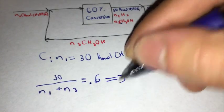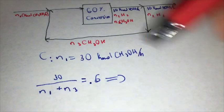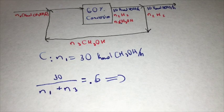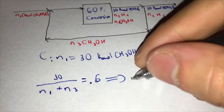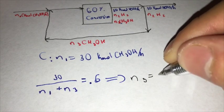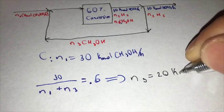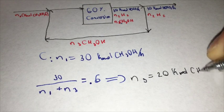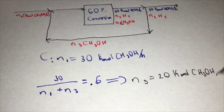That, when we solve it, remember we already have N1 which is 30, is going to give us our N3, which is equal to 20 kmol of CH3OH per hour.